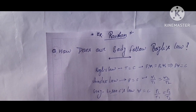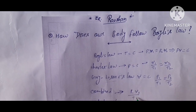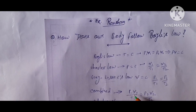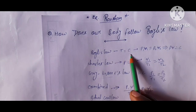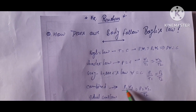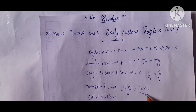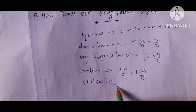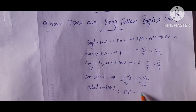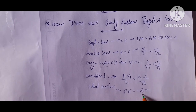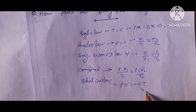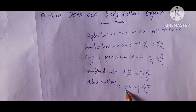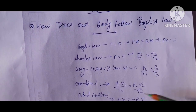When Boyle's, Charles's, and Gay-Lussac's laws are all combined, it becomes: P1V1/T1 = P2V2/T2. If T is constant, it becomes Boyle's Law; if P is constant, it becomes Charles's Law; if volume is constant, it becomes Gay-Lussac's Law. The ideal gas law is PV = nRT, where R is the ideal gas constant, T is temperature, n is number of moles, V is volume, and P is pressure.